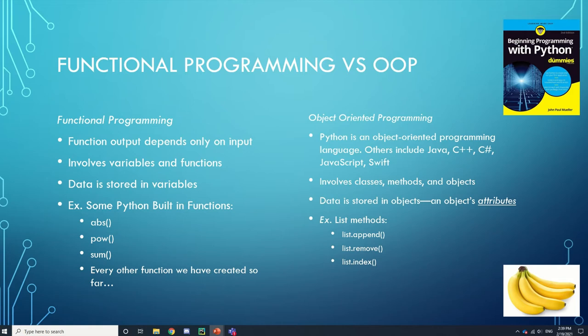We have some new members, so I'll quickly gloss over what we've learned. You can go to the tutorials on the website, or email me or message me on Discord with questions. That's all been under functional programming, which is manageable when you're first getting started and relatively easy to read through. But when you get into higher levels, you're going to use object-oriented programming. Python is an OOP language, just like Java, C++, C Sharp, JavaScript, and Swift — most of the major programming languages.